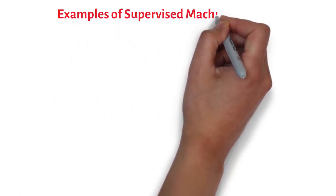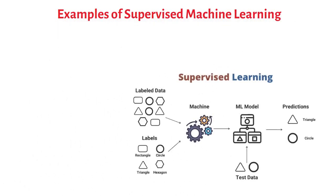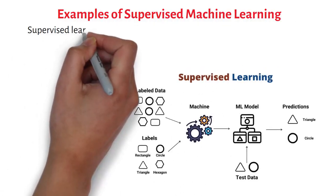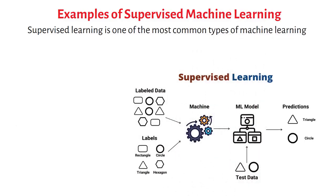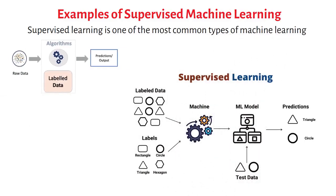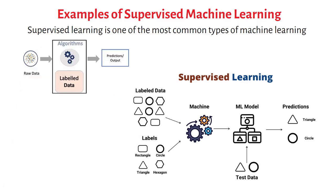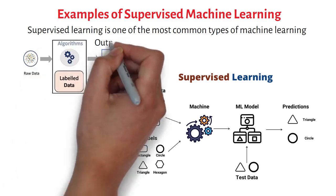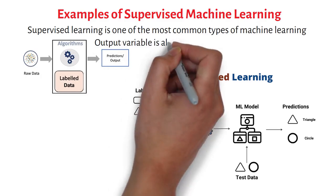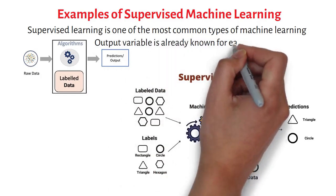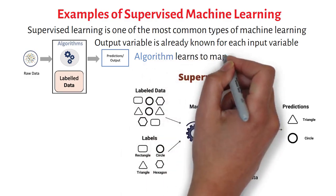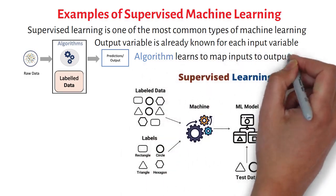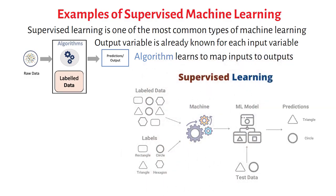Supervised learning is one of the most common types of machine learning, where the algorithm is trained on a labeled dataset. In a labeled dataset, the output variable is already known for each input variable, and the algorithm learns to map inputs to outputs based on this training data.